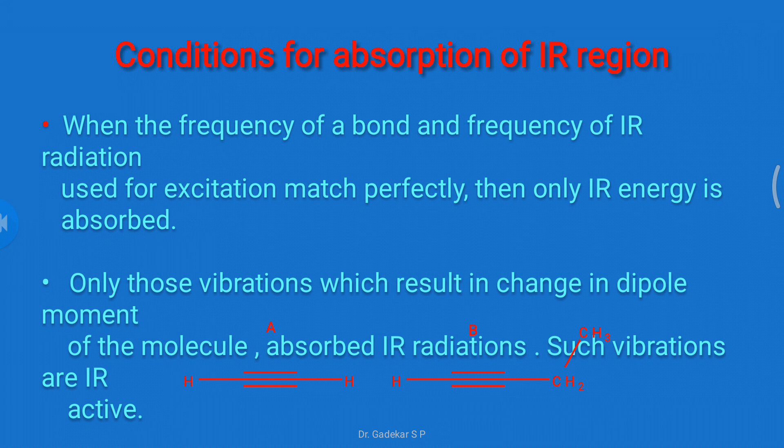These are the two conditions for absorption of IR region. First, the frequency of the bond and frequency of IR radiation must match perfectly — then only IR energy is absorbed. Second, those molecules which vibrate and result in a change in dipole moment absorb IR radiation and are IR active; otherwise they are IR inactive. Symmetrical molecules have no dipole moment, so they are not IR active. Acetylene A is not IR active; acetylene B is IR active because it is unsymmetrical and shows dipole moment.